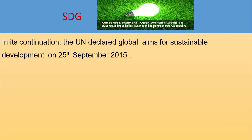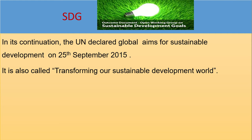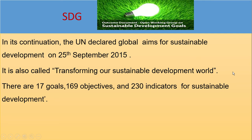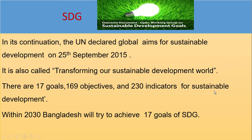In continuation, the UN declared global aims for sustainable development on 25th September 2015, called 'Transforming Our World.' There are 17 goals, 169 objectives, and 230 indicators for sustainable development. Bangladesh aims to achieve all 17 SDG goals by 2030.